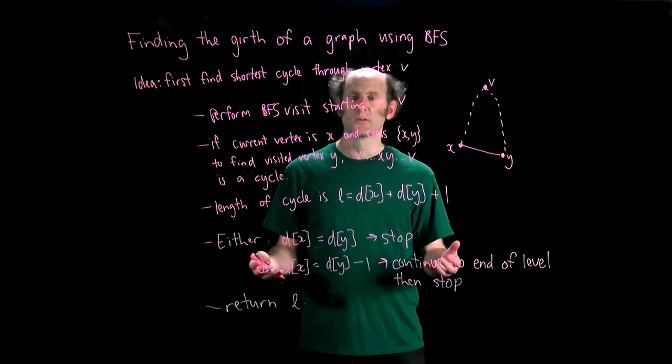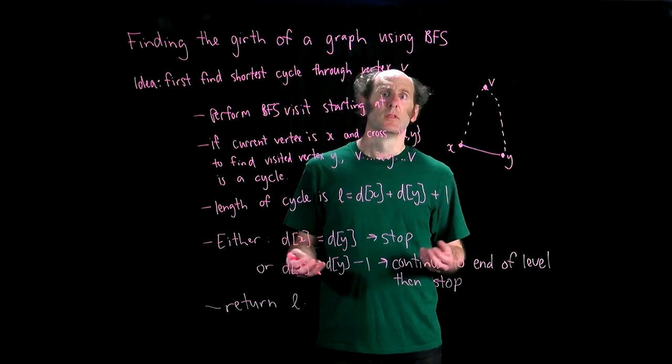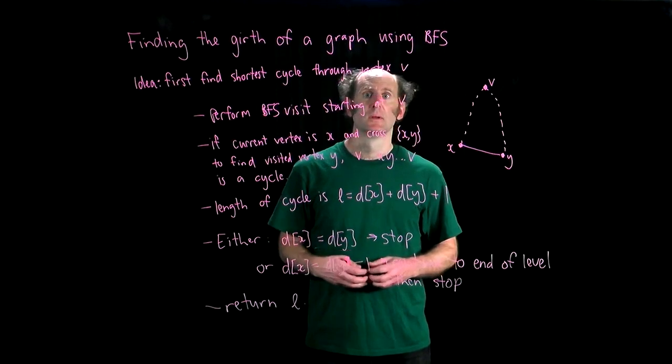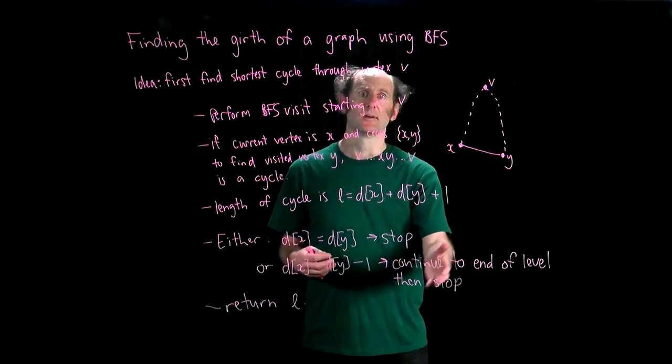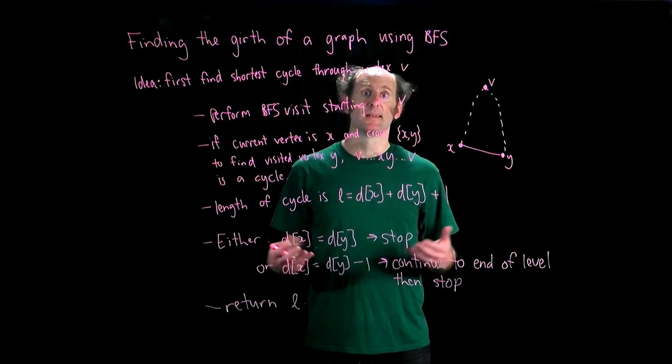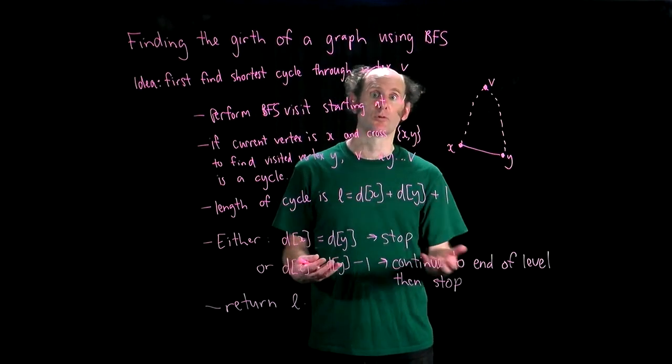Using this method we can find the length of the shortest cycle through any vertex v, so we can find the girth of the graph simply by performing the procedure for every vertex v in the graph and taking the minimum length of cycle that we find across the whole graph.